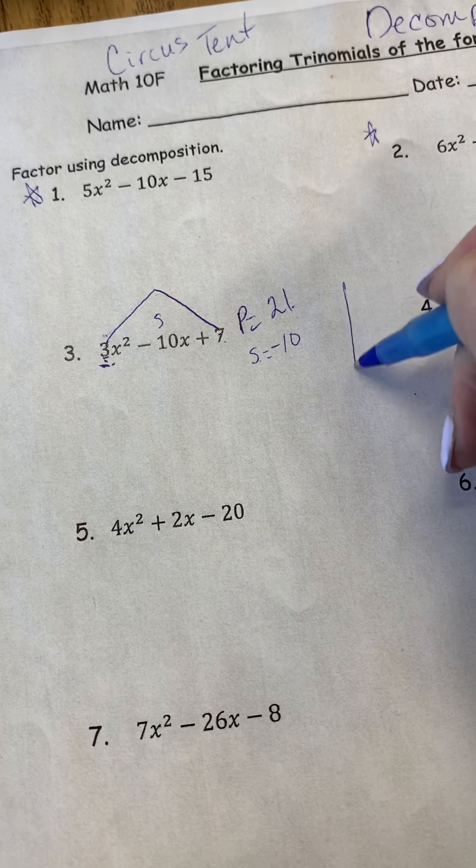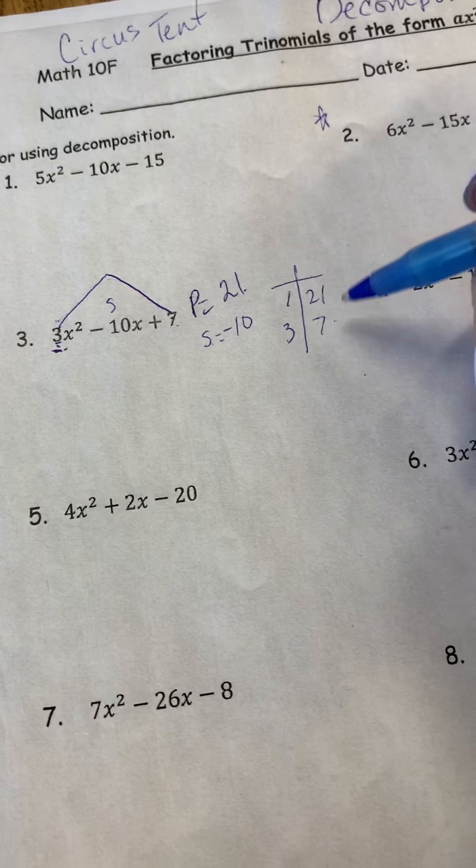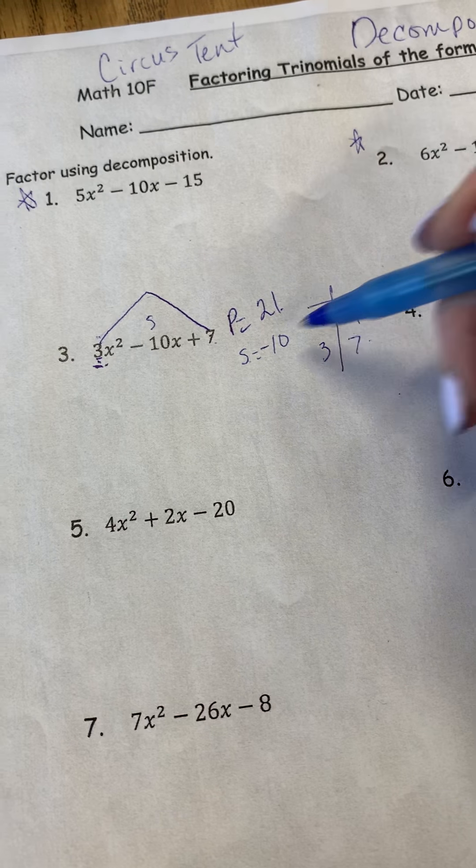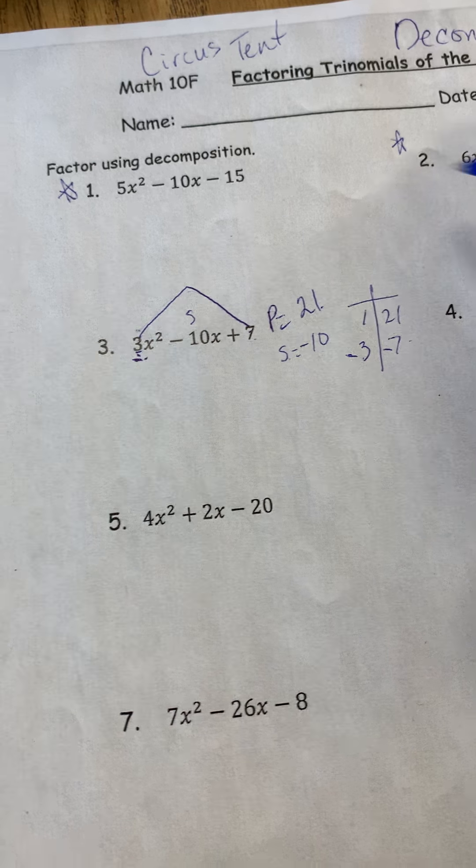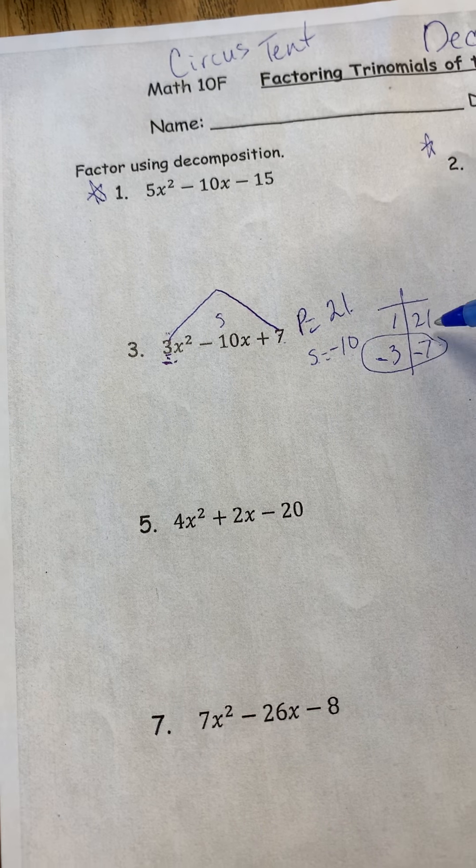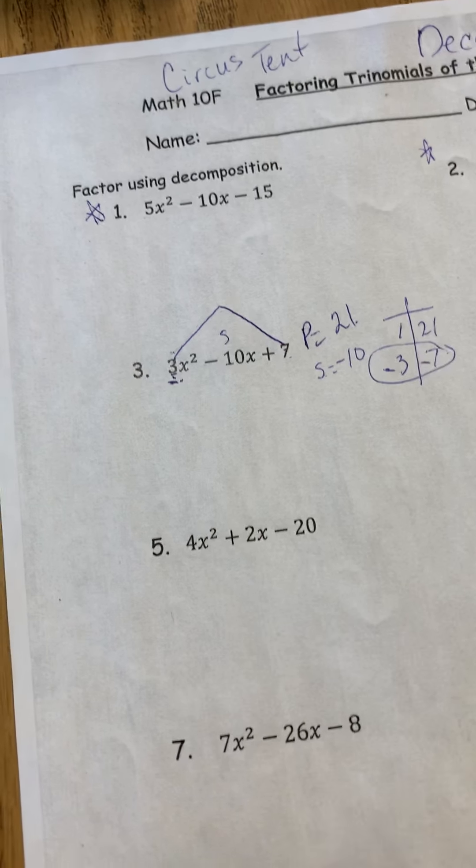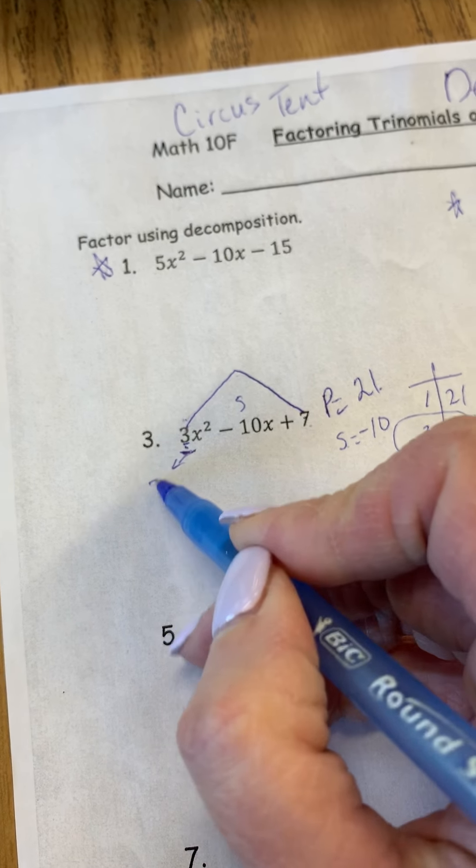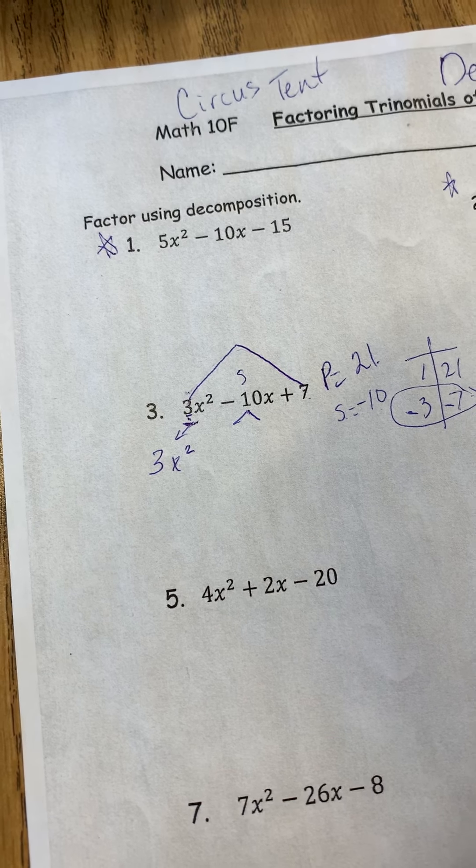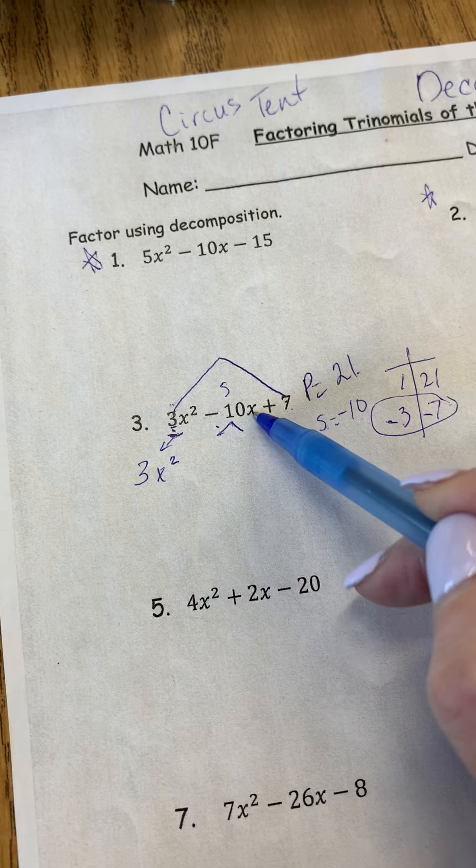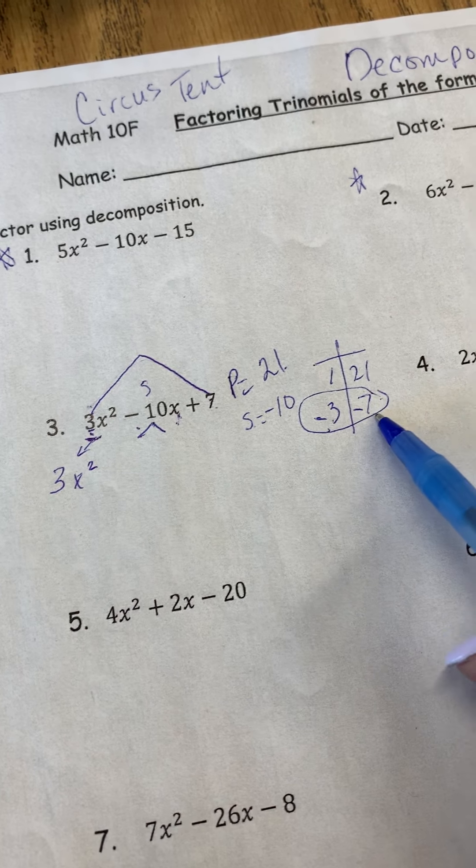So you've learned this already, though, right? So we're just going to write down the factors of 21, 1 and 21, 3 and 7. And now we have to figure out which set of factors can we get to add up to negative 10. And we know that it's going to be negative 3 and negative 7. So now I'm going to pick these two, and now this is where the decomposition comes in. So now pay rapt attention to my soothing voice.